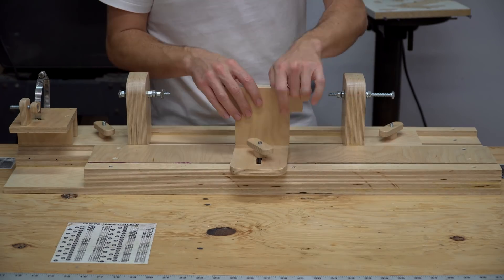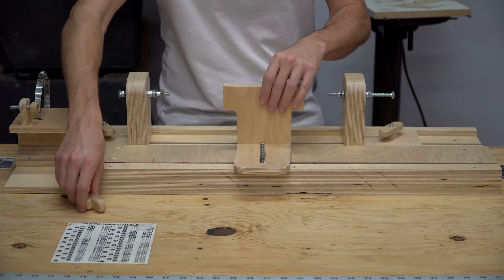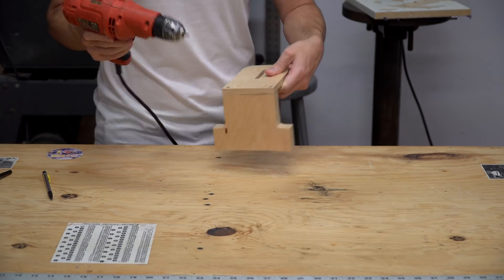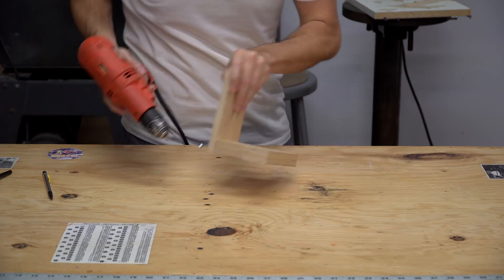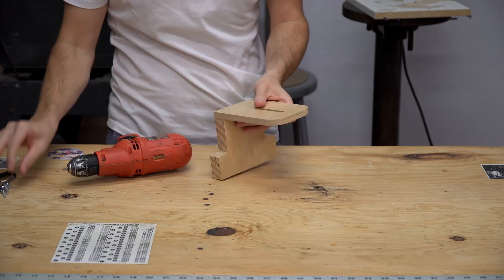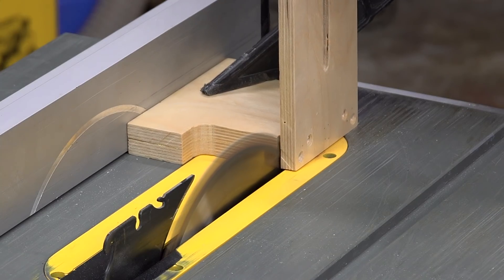I removed the tool rest from the lathe and then removed the screws that hold the two pieces together. The pieces are also held together by glue and pin nails, so I very carefully cut them apart using the table saw.